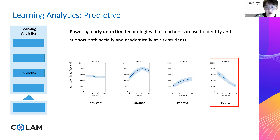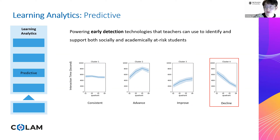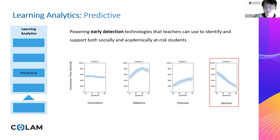Moving on, predictive analytics generated through either supervised or unsupervised machine learning models have the potential to power early detection technologies, which teachers can use to identify and support both socially and academically at-risk students. For example, students subject to social isolation or friendship issues can be detected by clustering their proximity to other students and their social interaction patterns. However, we do not recommend adopting a generalized predictive model; predictive analytics should ideally be informed by the learning design, as the meaning behind the same spatial behavior could differ significantly in various learning designs.